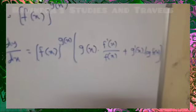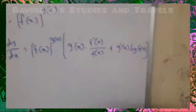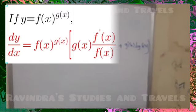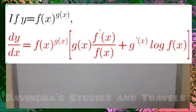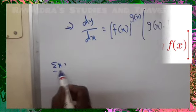This is a very useful shortcut formula for very lengthy sums which we do in our normal exams. Once again, if y equals f(x)^g(x), then dy/dx equals f(x)^g(x) times [g(x) · f'(x)/f(x) + g'(x) · log f(x)]. Now let us do an example.